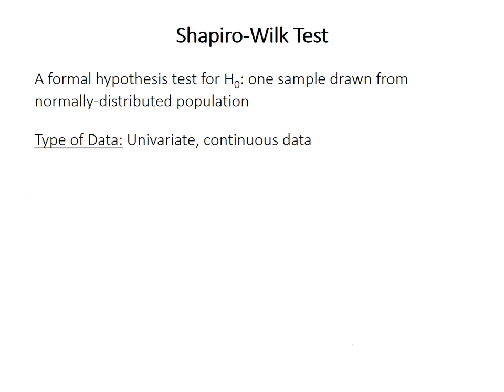The Shapiro-Wilk test is a formal test of the null hypothesis that one sample is drawn from a normally distributed population. Because the normal distribution is a continuous probability distribution, you can only use this test on univariate continuous data.